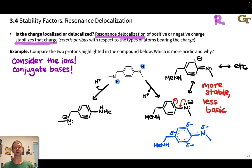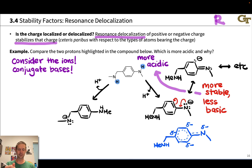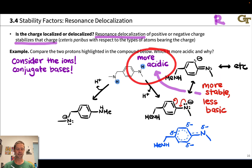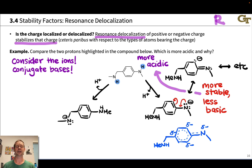That makes this conjugate base more stable — the charge is delocalized. The effect on acidity: that's going to make the proton linked to the nitrogen whose conjugate base has resonance stabilization more acidic. The conjugate base is more stable and less basic, so the conjugate acid is more acidic. That's the resonance delocalization factor in action, and it's very, very important — the second most important structural factor as a rule.